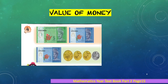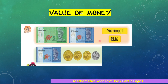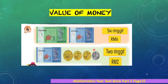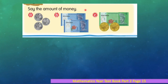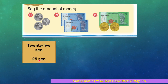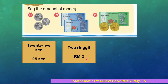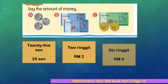Look at this: five ringgit and one ringgit combined is six ringgit. One ringgit combined with one piece of 50 cent coin, two pieces of 20 cent coin, and one piece of 10 cent coin makes two ringgit. Also, ten cents, ten cents, ten cents, and five cents combined with two one-ringgit notes makes two ringgit and 35 cents. One piece of five ringgit note and two pieces of 50 cent coins makes six ringgit.